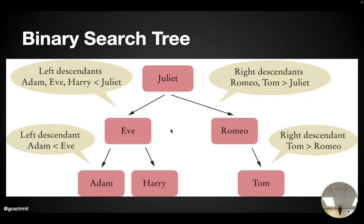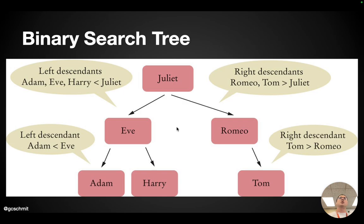An example of a binary search tree from the text. This is a binary search tree, and what I want to highlight is it's still a binary tree. A node may have up to two children: a left child and a right child. What makes this a binary search tree, as opposed to just the binary trees we've been studying, is that there's a relationship between the left descendants and the node and the right descendants and the node.